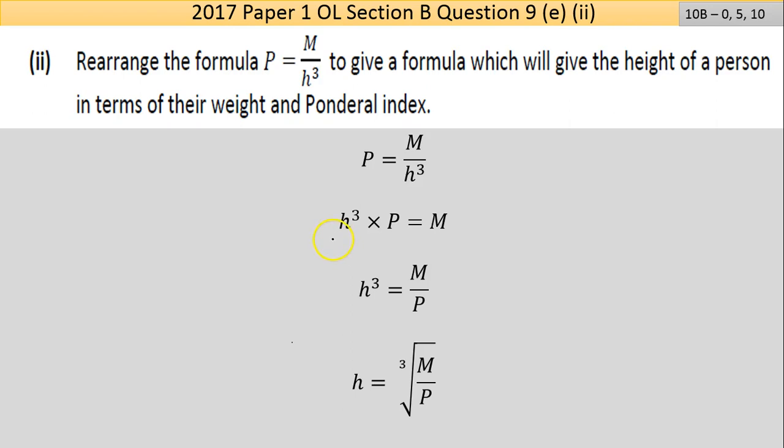Looking at the equation, I want h on its own. At the moment h is on the bottom on the right-hand side, so I'll bring h³ across the equal sign. It was divided on the right, so becomes multiplied on the left: h³ × P = M. Now the P needs to move: h³ = M/P. Now this cube is in the way. The opposite of a cube is a cube root, so h = ³√(M/P). That's the answer.